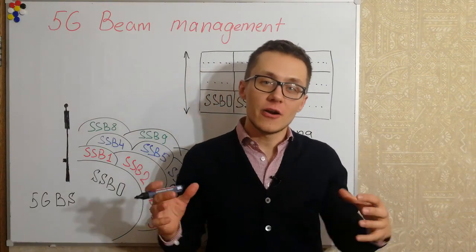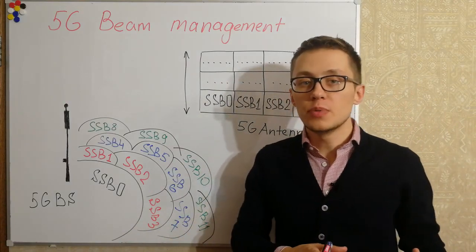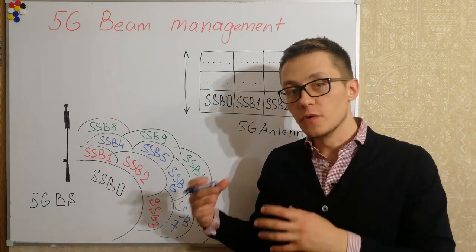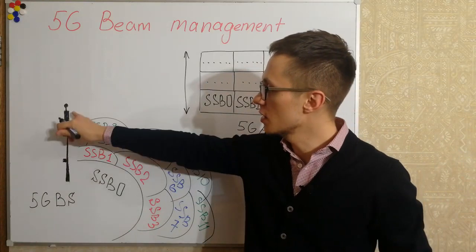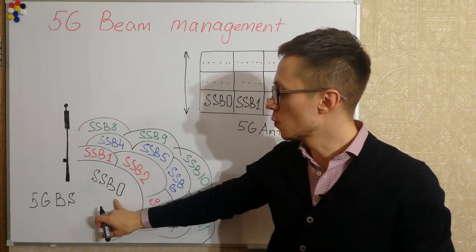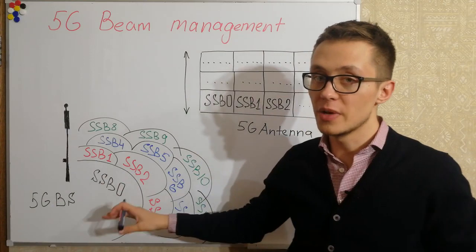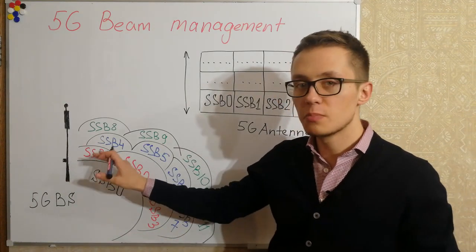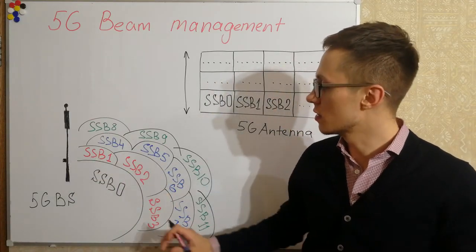Let's start with SSB organization. SSB may be organized very differently — it depends on vendor implementation, different parameters, subarrays, virtual and physical ports. In my example here, the 5G base station can down-tilt SSB with index 0 in order to serve the nearest area under the base station. SSB 1, 2 and 3 can be a little bit up-tilted so beams will serve a particular area in that direction.